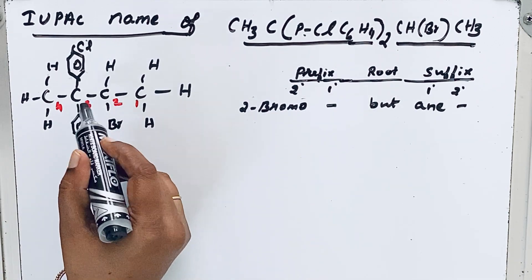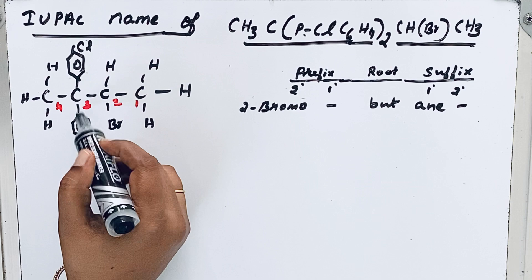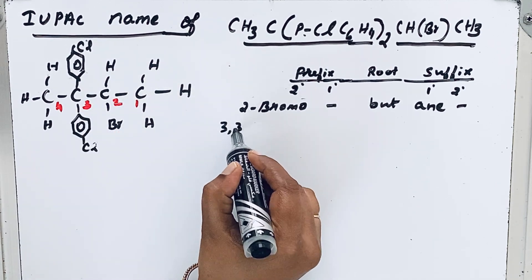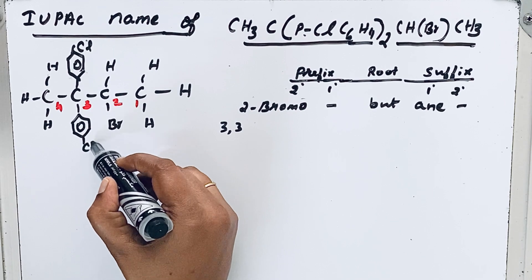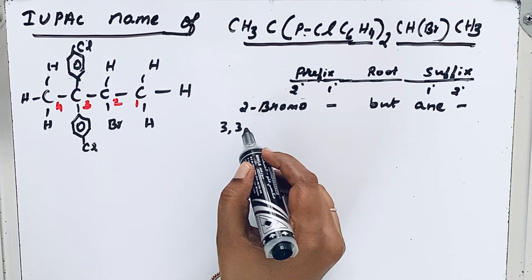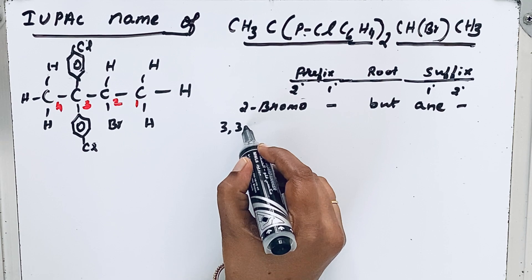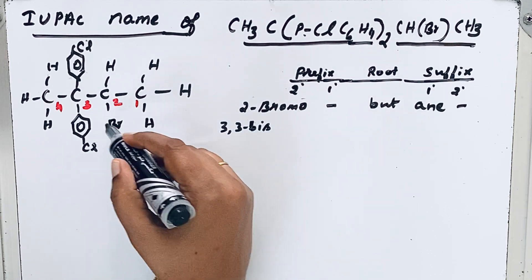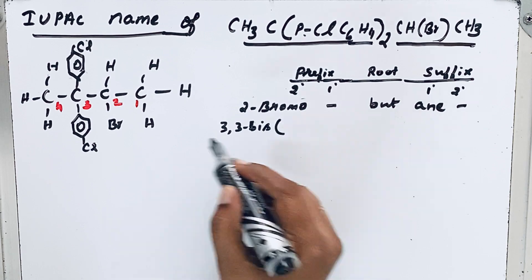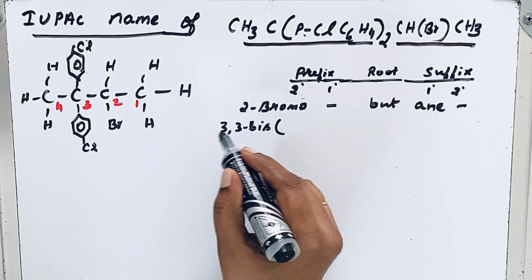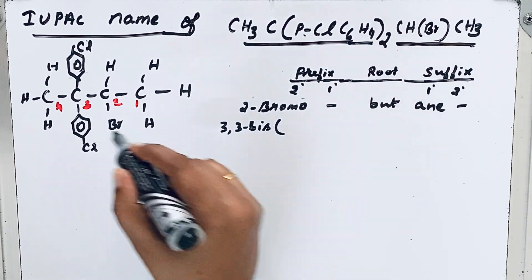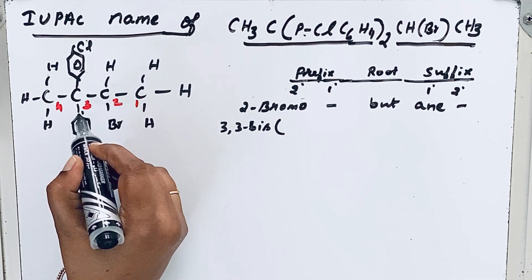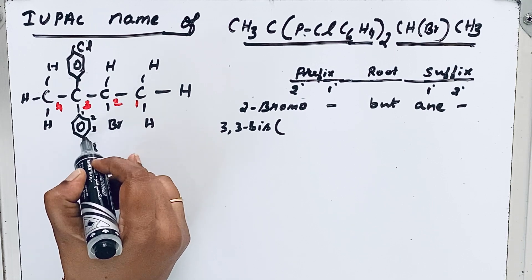Then here in the third carbon, two phenyl groups, substituted phenyl group is attached. So three, three. This phenyl group is a complex group, so instead of di we are using bis. Bis. This is a complex group, so we are writing inside the bracket 4-chloro. Because why 4-chloro? This phenyl group, we are giving numbering one, so two, three, four.